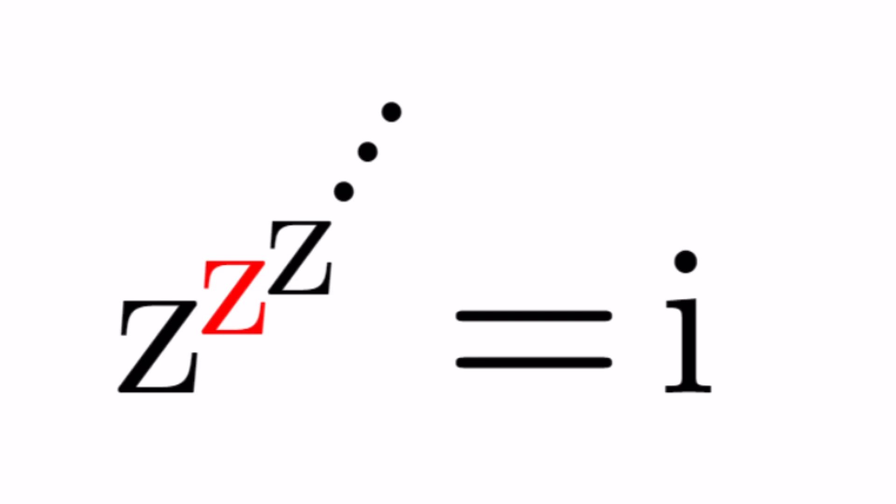Now why is one of the z's red? Just that you can kind of distinguish. They're all the same pretty much. So this is kind of like an exponential tower. Just for fun I wanted to change the color. You know why? Because I can.